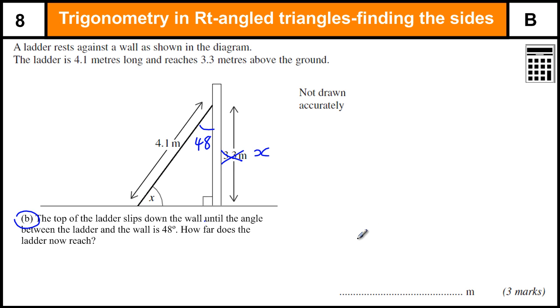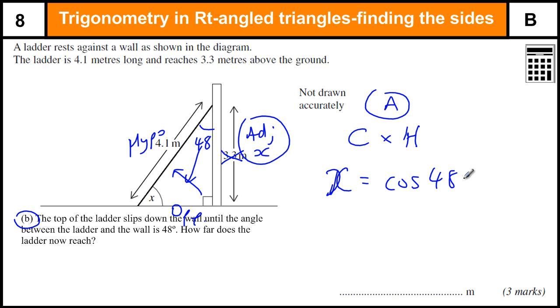We've got to label up our triangle. That's our hypotenuse, this is our opposite side. We should be able to figure out that we need to use the cosine formula: cos equals adjacent over hypotenuse. We want to find the adjacent side, so we've got to do cos times the hypotenuse. So the adjacent side, which I'm going to call X, is equal to cos of 48 times by 4.1.